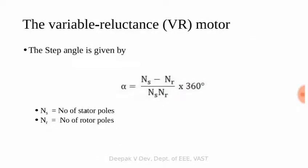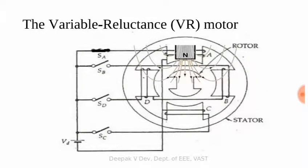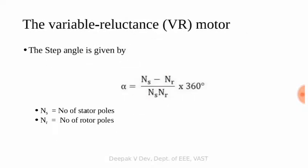The step angle for a variable reluctance stepper motor depends on the number of poles. The formula for step angle is: step angle = (Ns minus Nr) divided by (Ns multiplied by Nr) multiplied by 360 degrees, where Ns is the number of stator poles and Nr is the number of rotor poles.